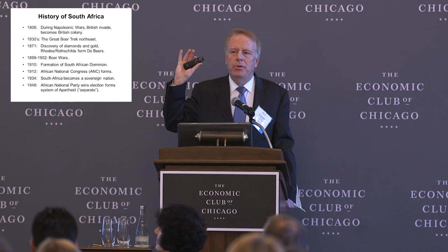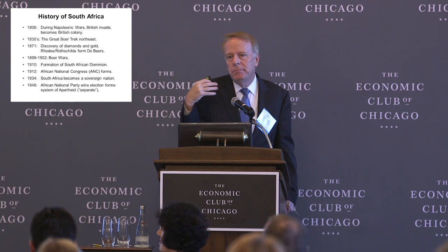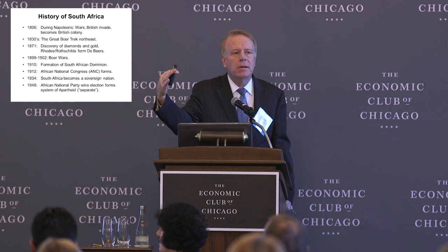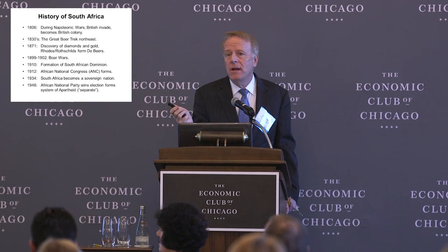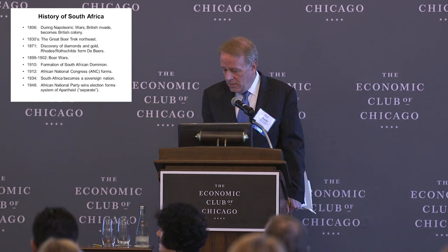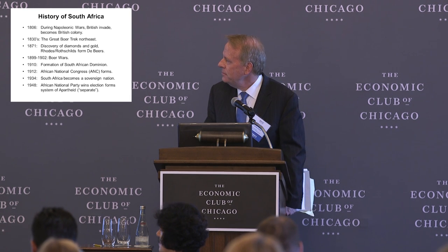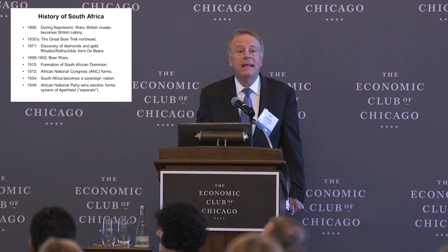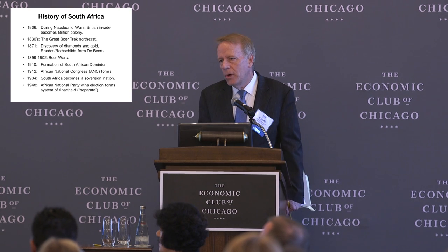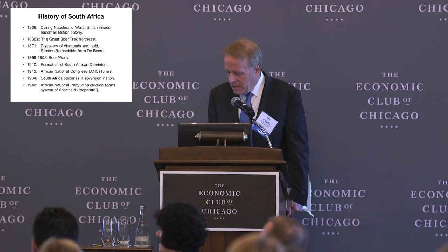That produced a huge influx of black Africans from other parts of South Africa. These were dangerous jobs, but relative to other opportunities, they were reasonably good-paying. The Rothschild family, by the way, were the ones who financed Rhodes and others in developing De Beers.